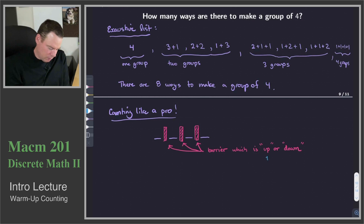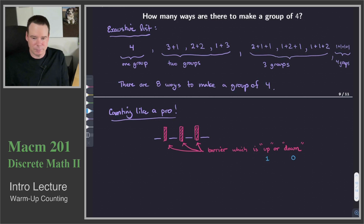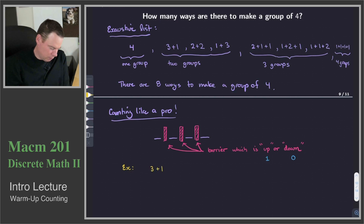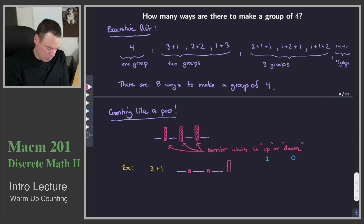There will be a barrier between each of the seats. This barrier could be either up or down, depending on whether you are part of the group with the person next to you or not. So there are two states for the barrier — up or down — and we can represent these two states: up associates with the number one, and down associates with the number zero. For example, suppose we had the triple-single configuration from our exhaustive list.